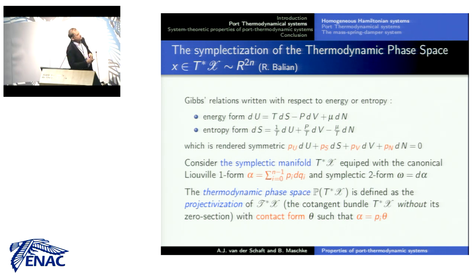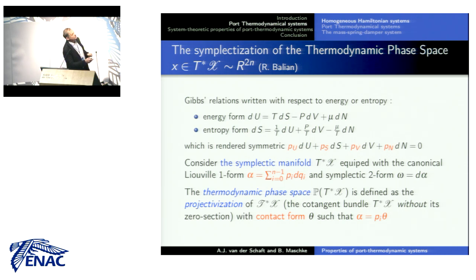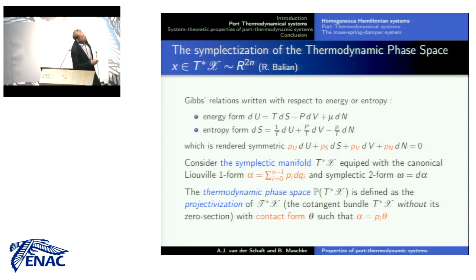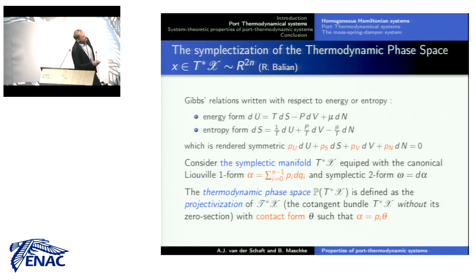If you look at contact representations, somehow you have to choose between two forms of the Gibbs equation — what we call the energy form and the entropy form. You know the transformation from one to the other, but somehow you would like to avoid that. You can make it symmetric: you have n+1 extensive variables and n intensive variables, and you can add one intensive variable to achieve complete symmetry. Changing notation a little, I can put these two formulas of the Gibbs equation into one single one.